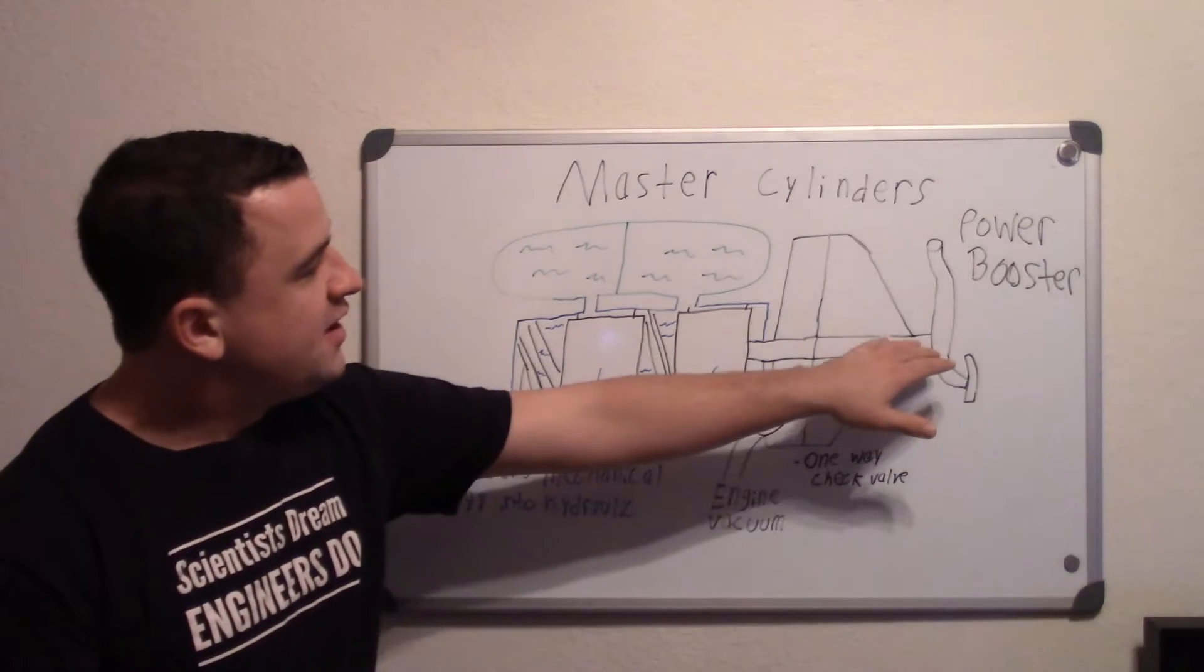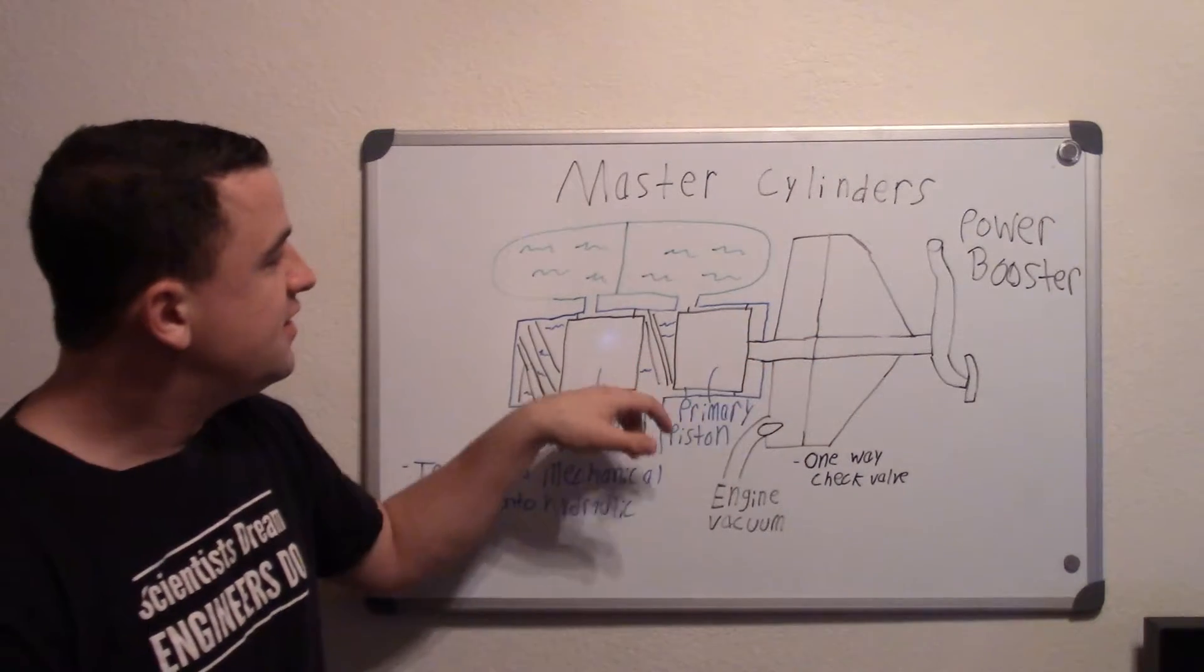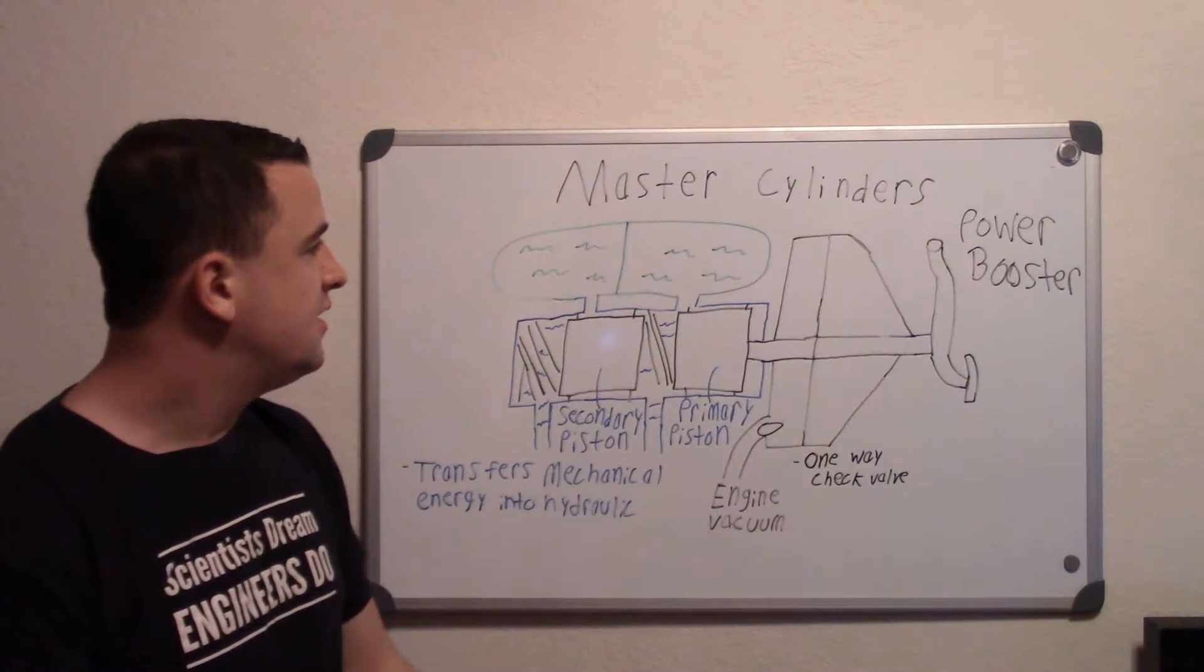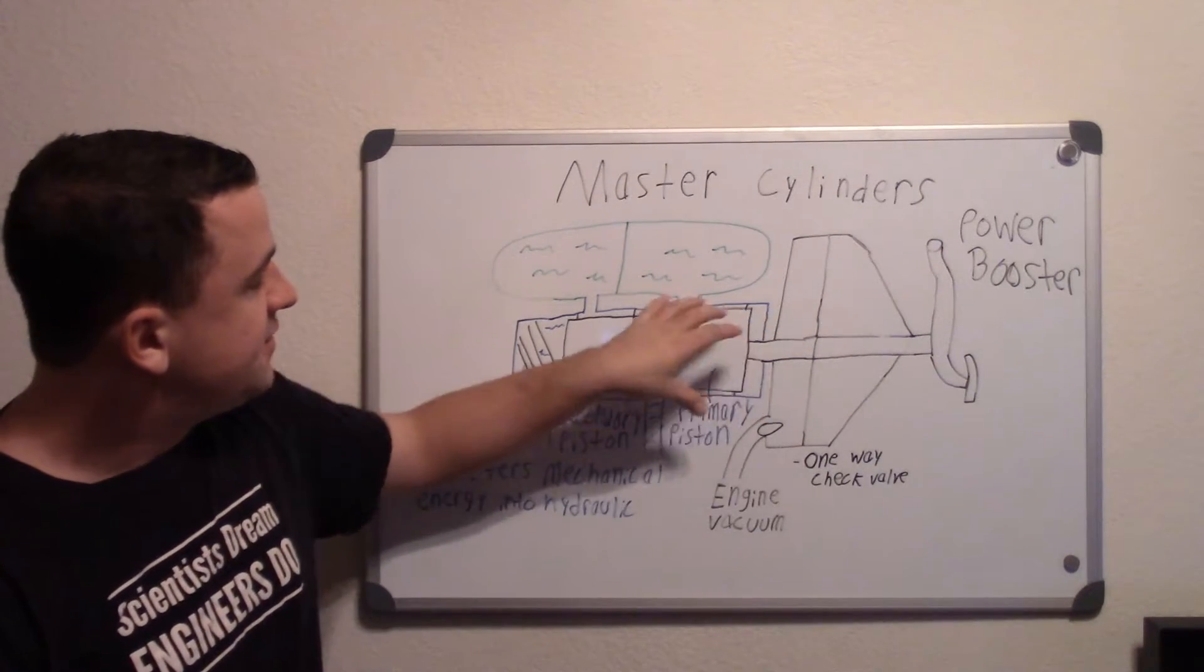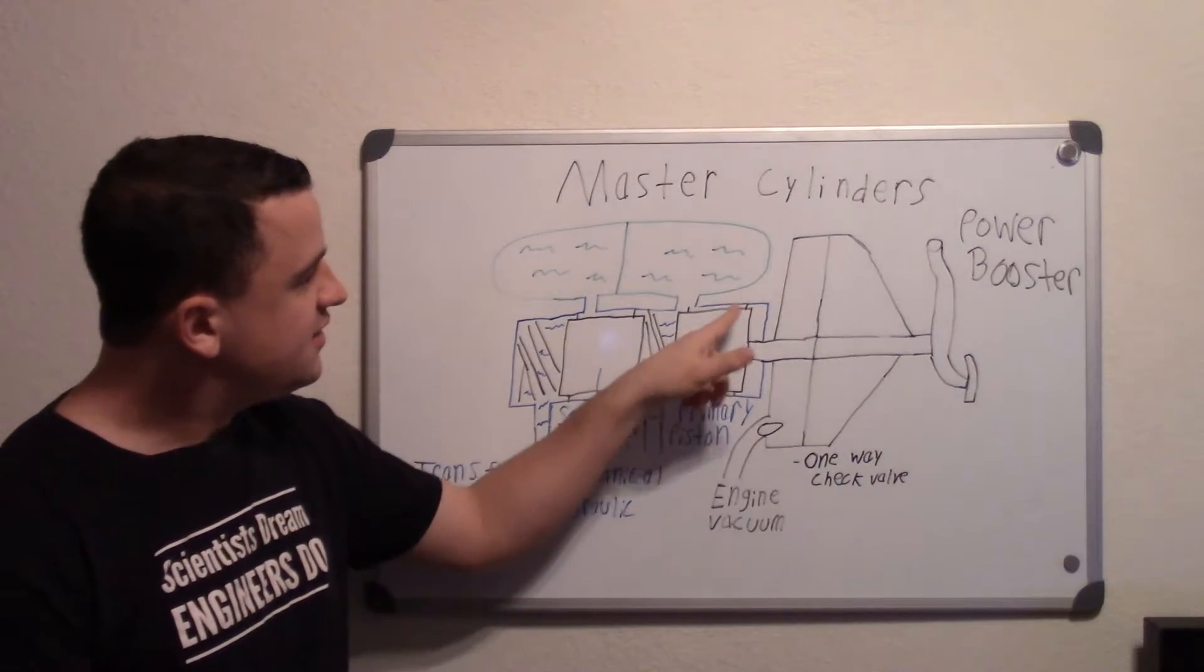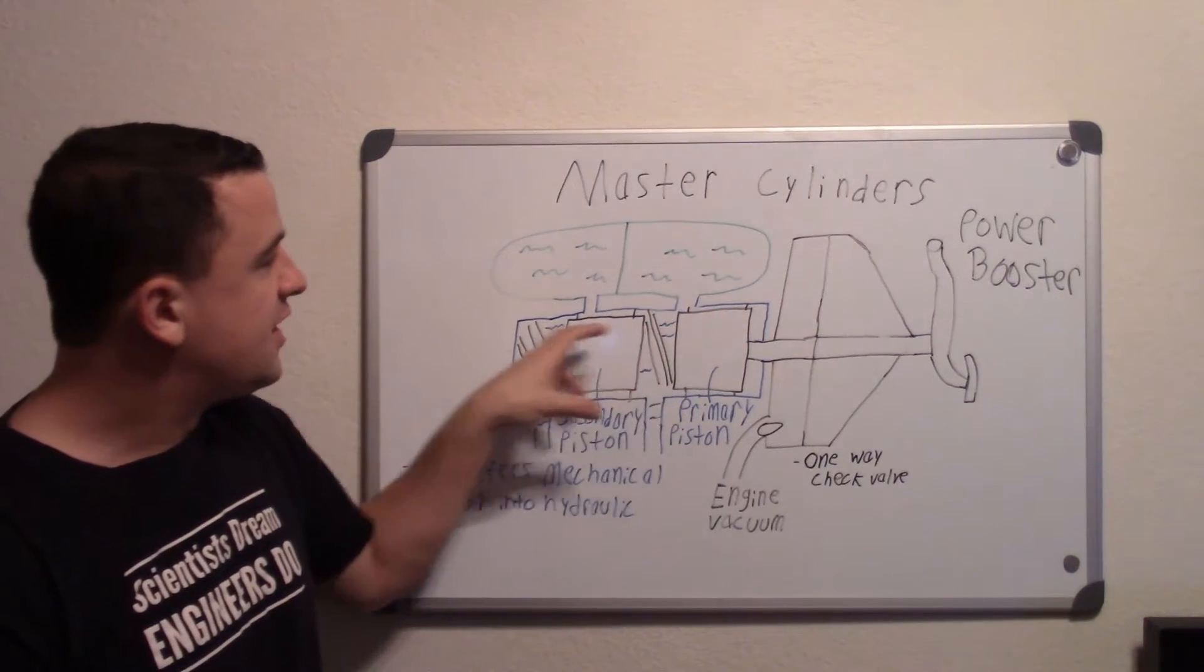So then that energy gets transferred into these pistons. That rod will push on these pistons. And basically these pistons will move and they have little seals on here so that it seals off the hydraulic pressure.